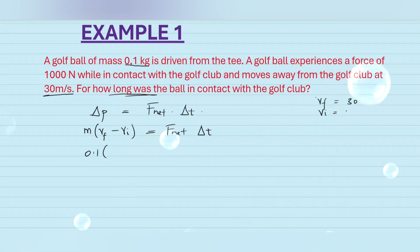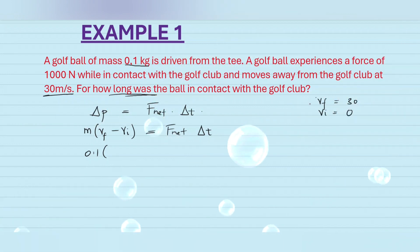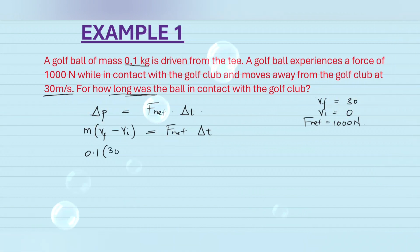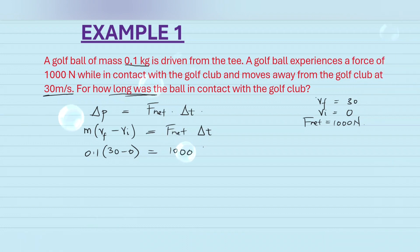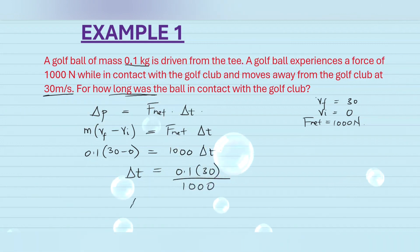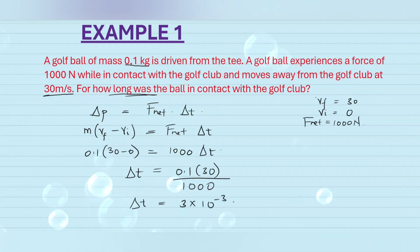The mass of the ball is 0.1 kg. The final velocity vf equals 30 m/s. The initial velocity vi equals 0 because it was initially at rest before being hit by the golf club. Fnet equals 1000 newtons. So: 0.1 × (30 - 0) = 1000 × delta t. Therefore delta t equals 0.1 × 30 divided by 1000, which gives us 3 × 10⁻³ seconds.